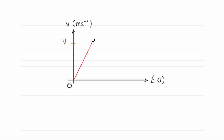And then it carries on at a constant speed. So you'd expect a horizontal line across here until it comes to a point where it's going to decelerate.